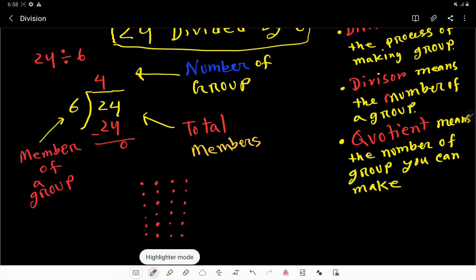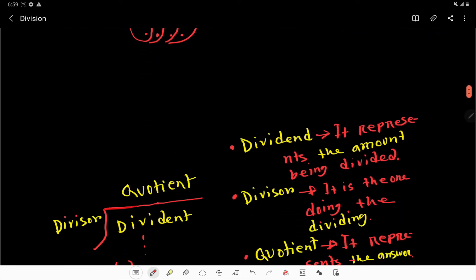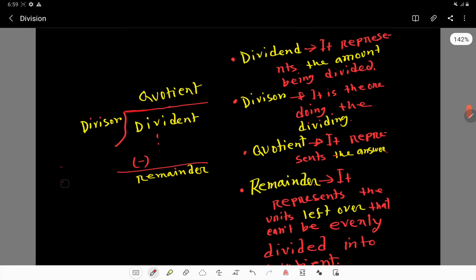So we have to make groups with 6 numbers because the divisor is 6. So we can make one group, we can make here two group, three group, four group. So here is the four groups, right?